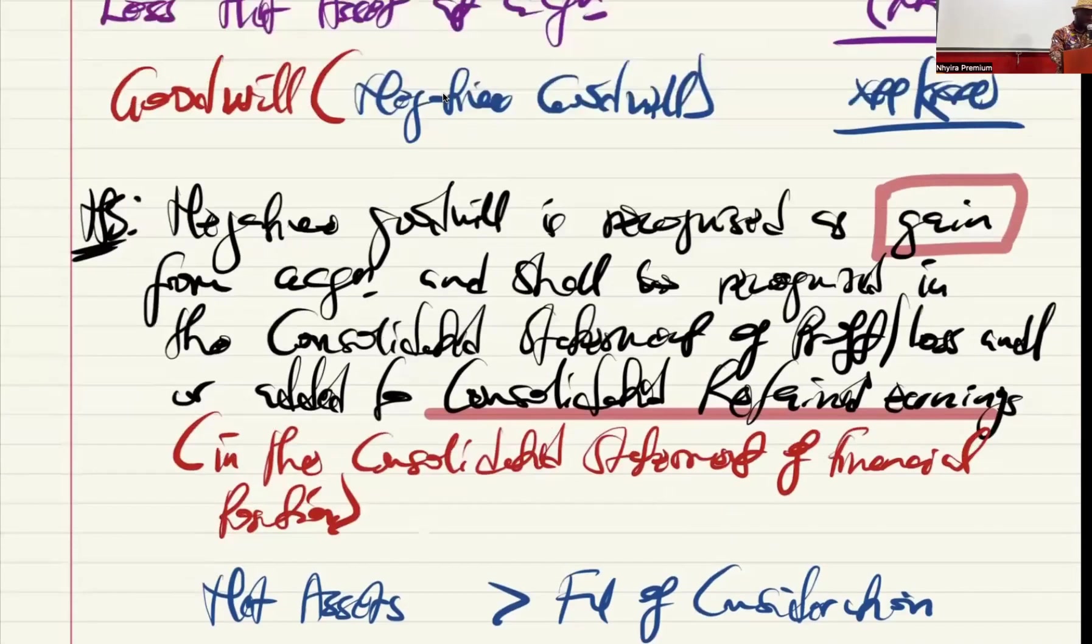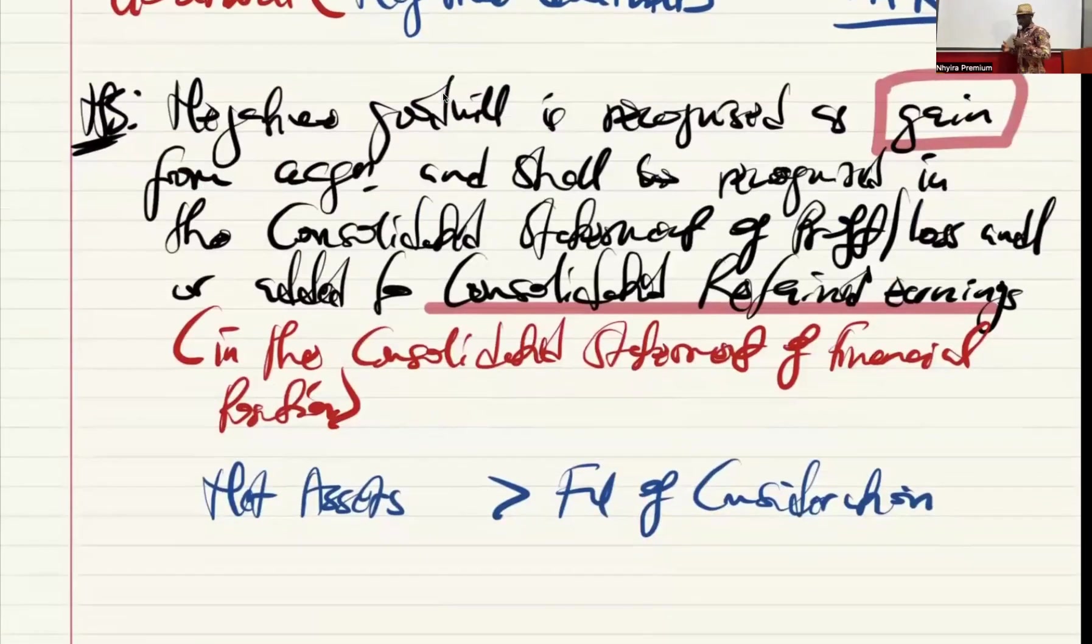So sometimes our goodwill figure will be negative, and if it is negative, this is what we do. But we have established that it means the net asset exceeds how much we paid. That is why we are getting a negative goodwill.